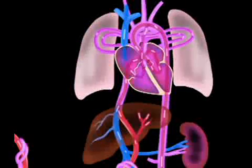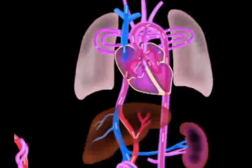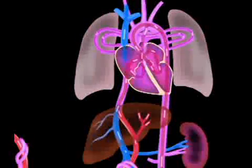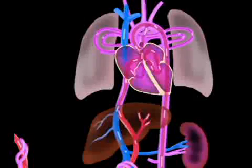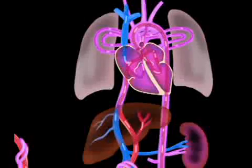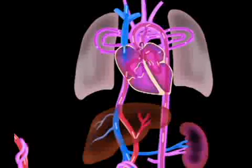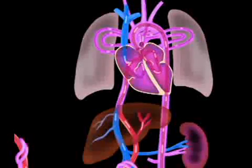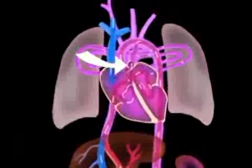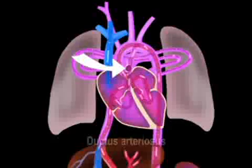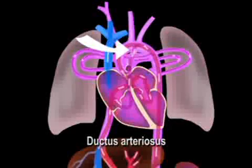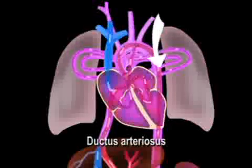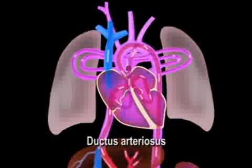During gestation, the fetal lungs are non-functional and need only enough blood for normal development. The majority of the circulating blood pumped from the heart into the pulmonary artery shunts into the ductus arteriosus, bypassing the lungs entirely.